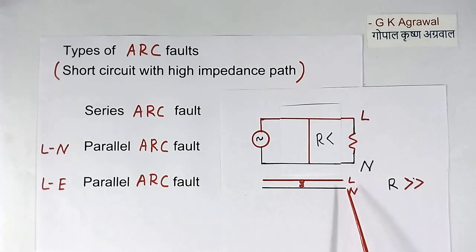If in place of neutral, it is earth, fault is between line and earth, then it is called line to earth parallel arc fault. So fire problem is there due to this kind of fault.